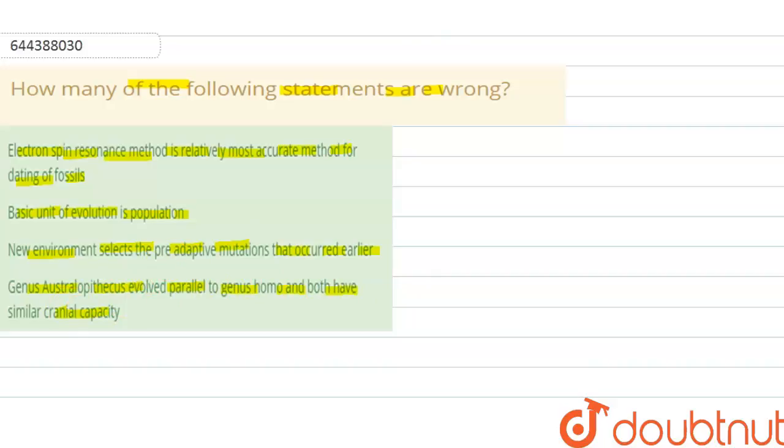we need to find out which statement is wrong. If we talk about the first one, it is saying that electron spin resonance method is relatively most accurate method for the dating of fossils. This is right because this method is the most recent and the most advanced method of dating and aging of fossils. So first statement is right. Basic unit of evolution is population, that is also right.